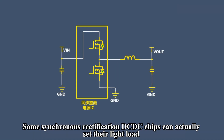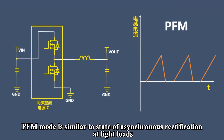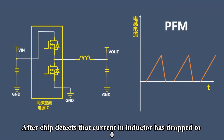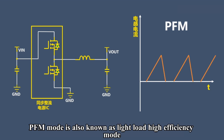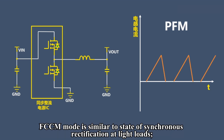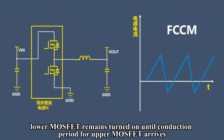Some synchronous rectification DC-DC chips can set their light load operating modes and can be set to PFM mode and FCCM mode. PFM mode is similar to the state of asynchronous rectification at light loads — after the chip detects that the current in the inductor has dropped to zero, the lower MOSFET will turn off and wait for the next conduction period for the upper MOSFET to arrive. PFM mode is also known as light load high efficiency mode. FCCM mode is similar to the state of synchronous rectification at light loads — after the current in the inductor drops to zero, the lower MOSFET remains turned on until the conduction period for the upper MOSFET arrives.